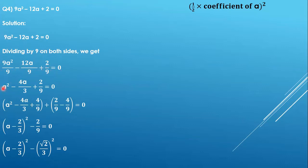So we get 9a²/9 - 12a/9 + 2/9 = 0, which gives us a² - 4a/3 + 2/9. The coefficient of a² has become 1.